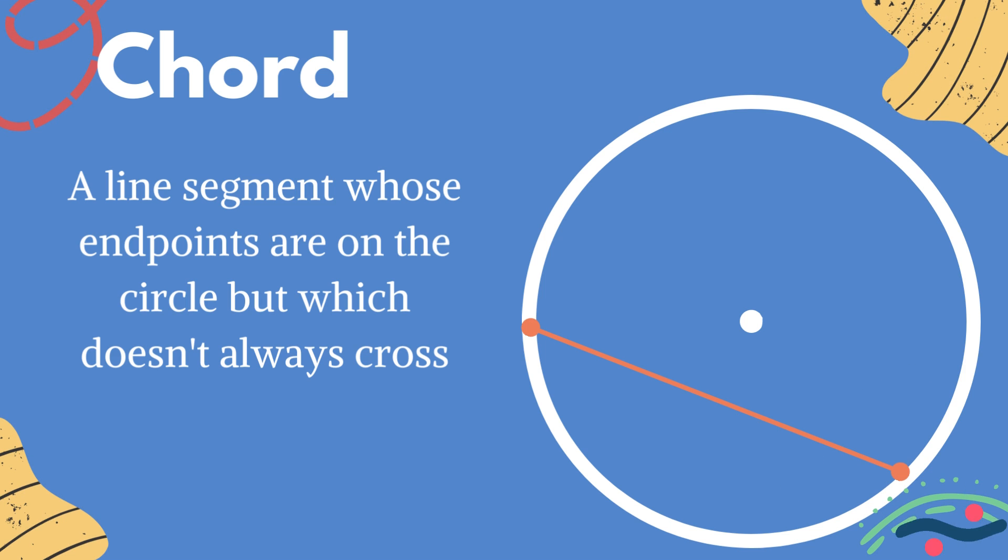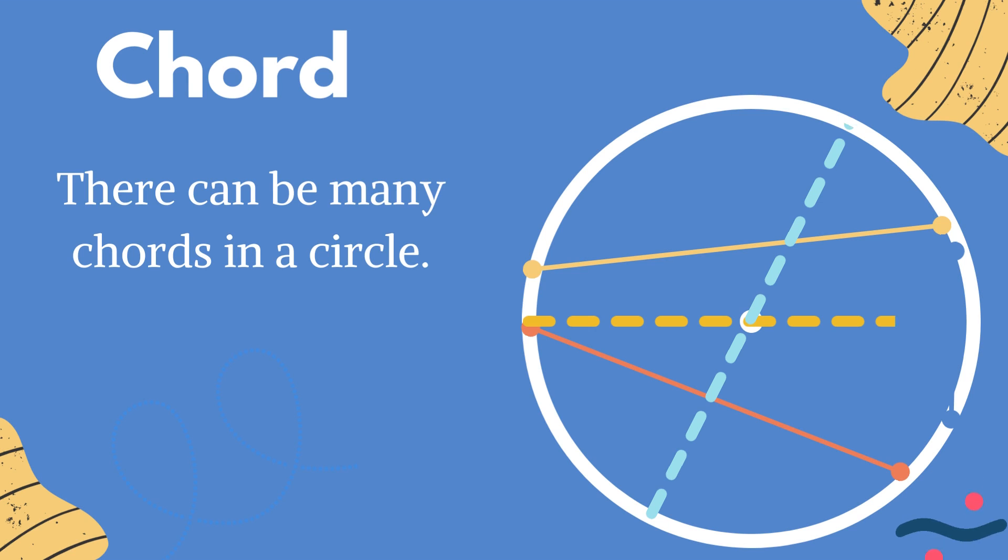Chord. A line segment whose end points are on the circle but which does not always cross the center of the circle is called a chord. There can be many chords in a circle. The longest chord is known as diameter as it passes through the center of the circle.